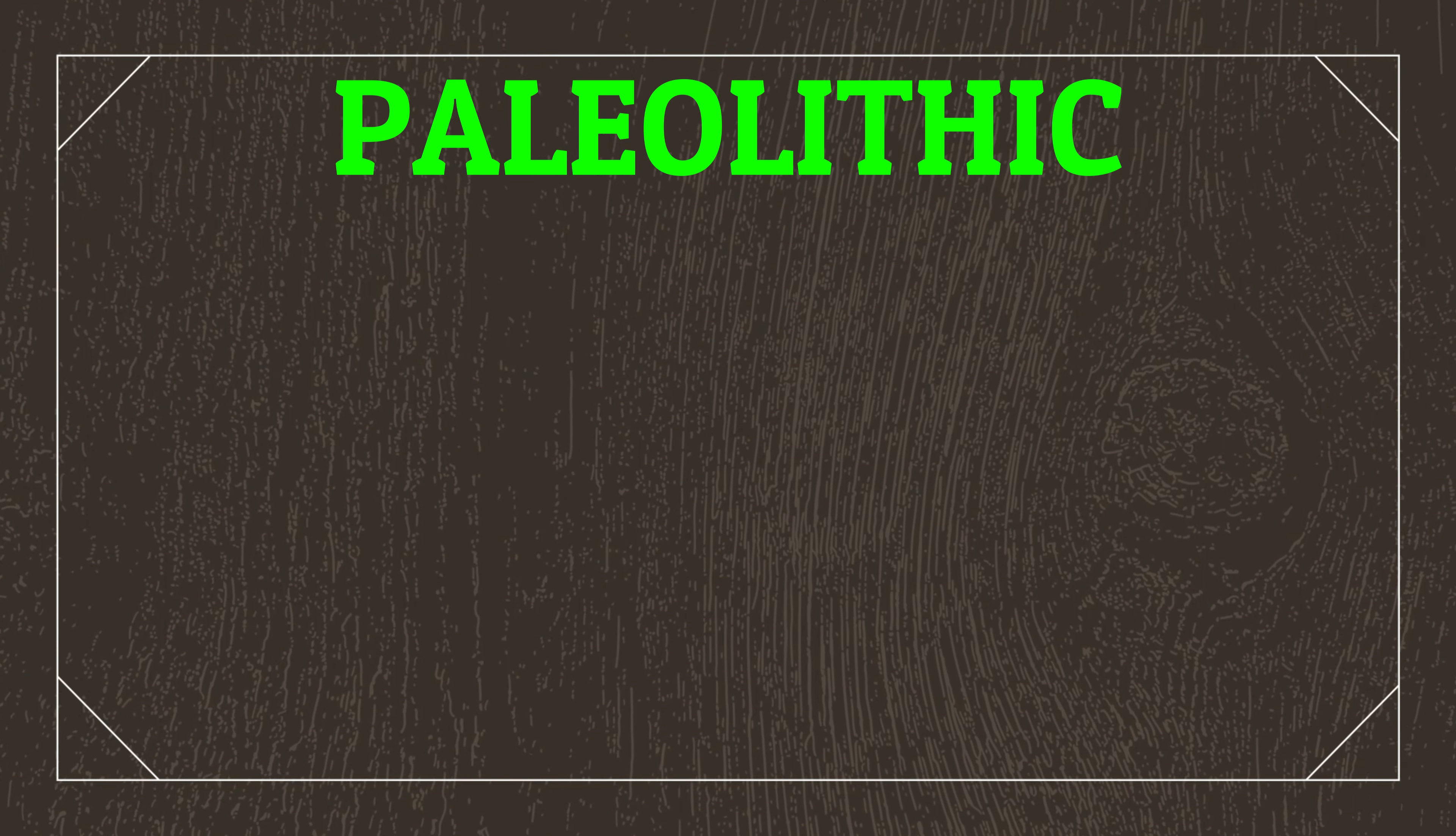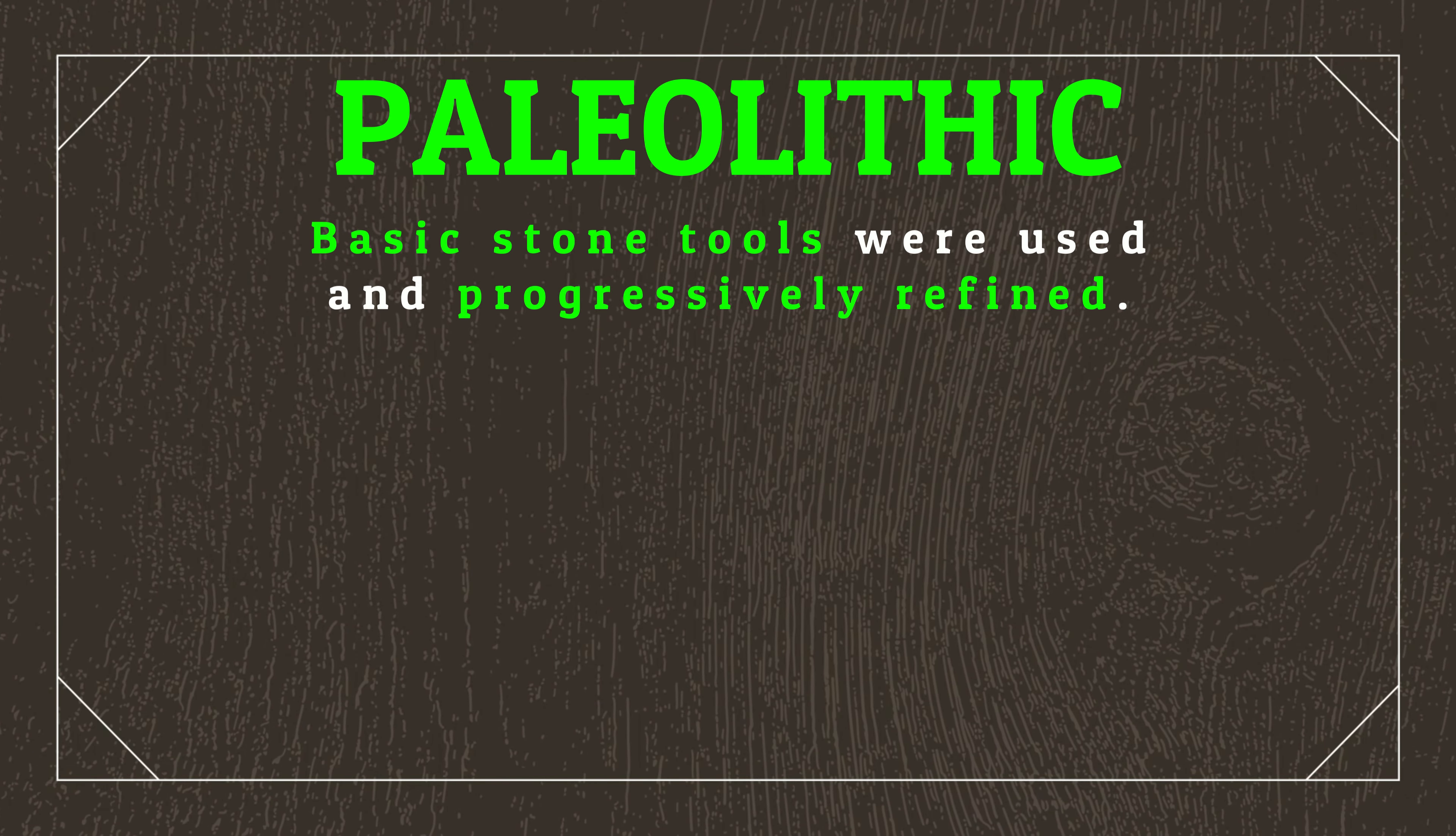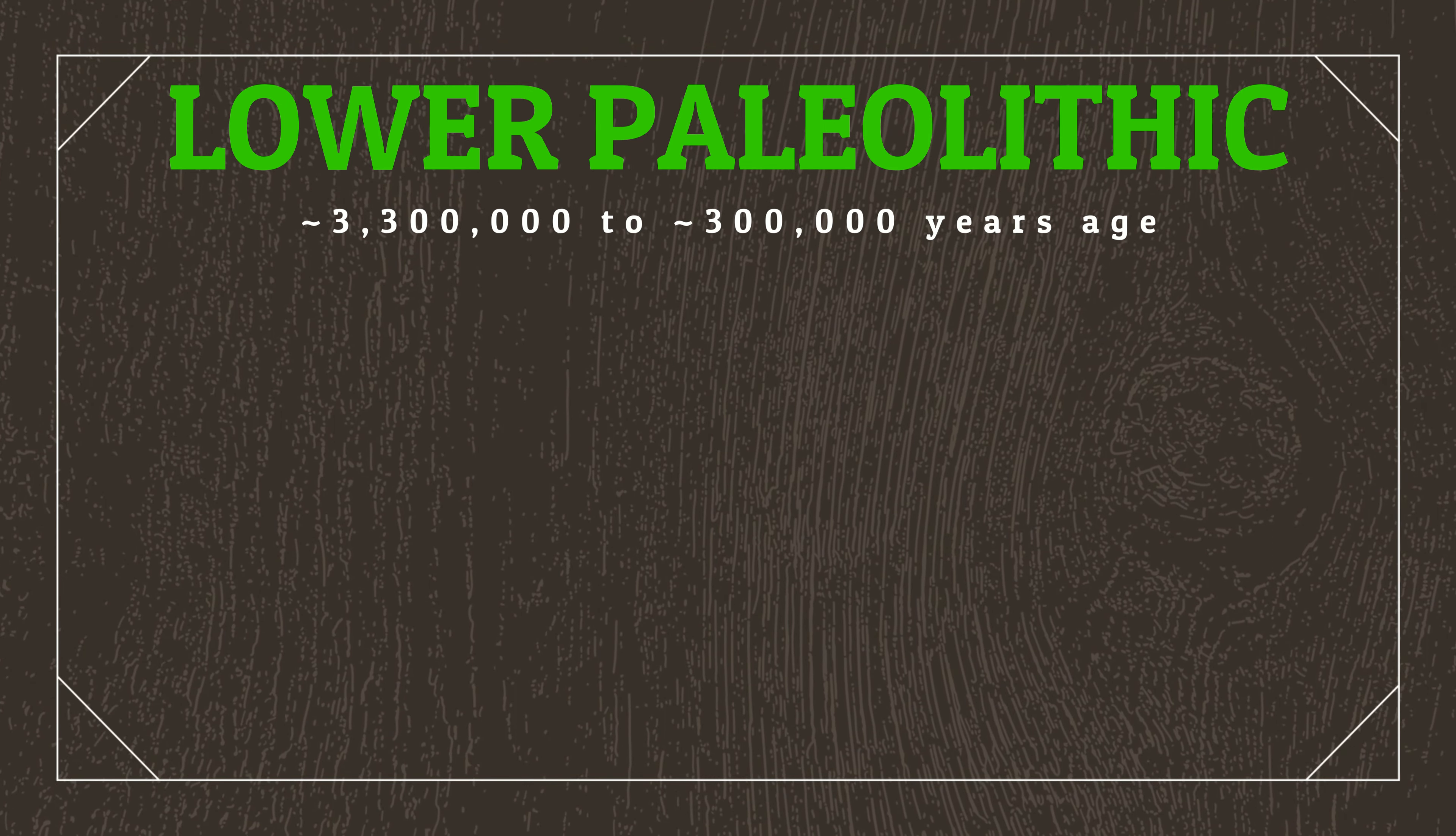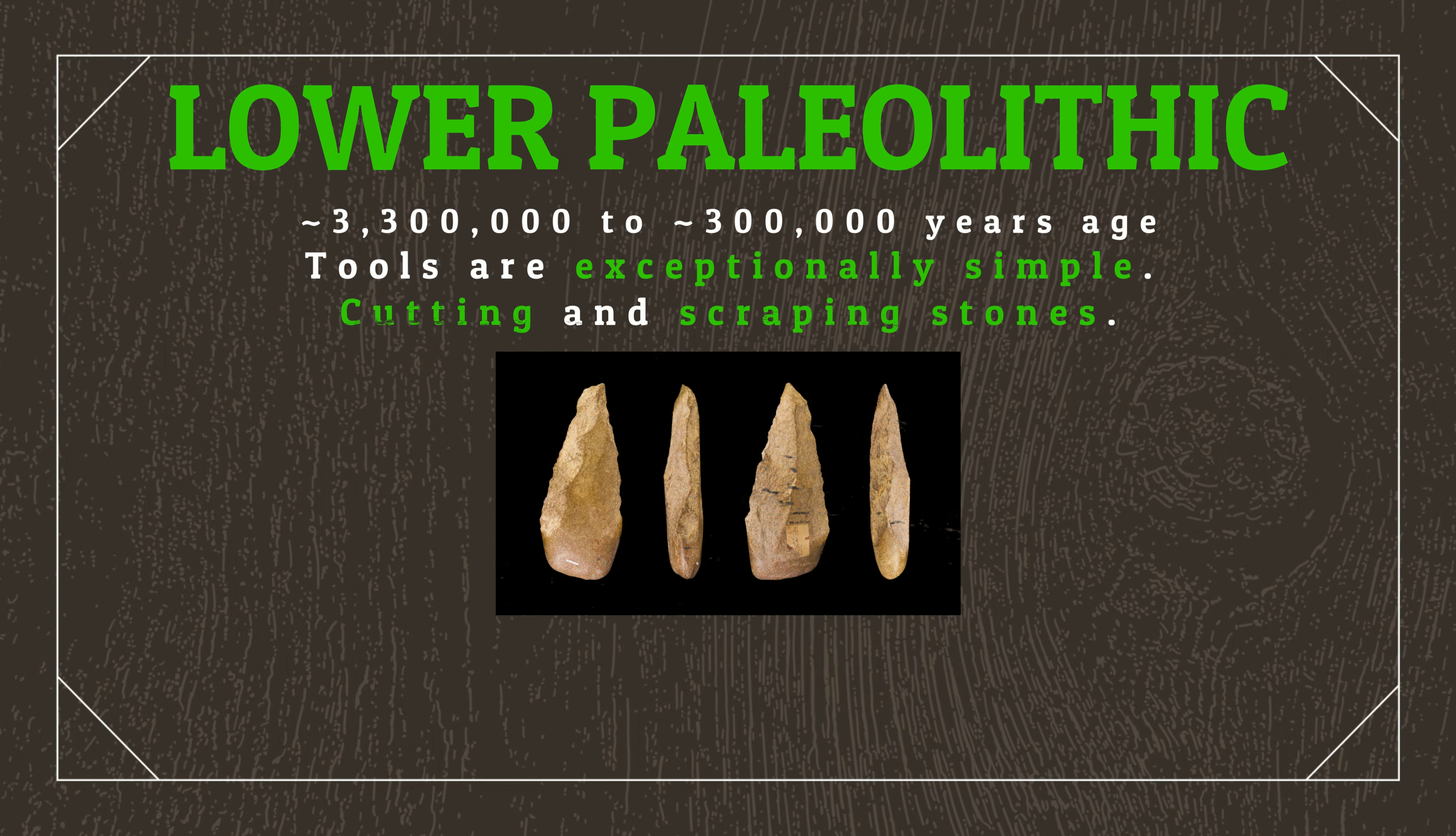The Paleolithic refers to the era where basic stone tools were used and progressively refined as part of a primitive migratory hunting lifestyle. To begin with, in the era we refer to as the lower Paleolithic, tools will be exceptionally simple, including instruments like cutting and scraping stones. It is also during this period that the use of fire would begin, used for both cooking and as a source of warmth, allowing sapient species the means of spreading into environments that would otherwise have been too cold to support them.